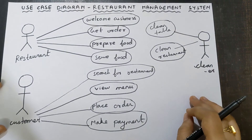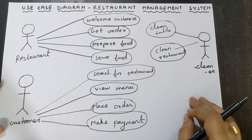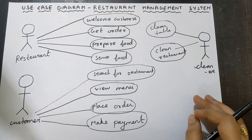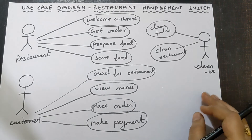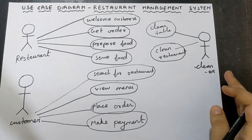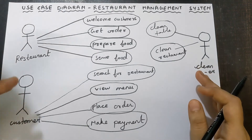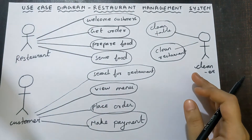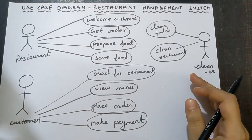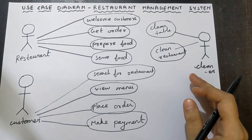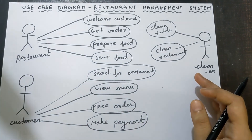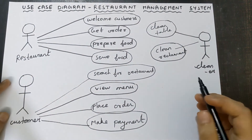Next is your third step — you need to mention the stereotype. There are two stereotypes: one is extend and one is include. Include means mandatory — it has to happen. Extend means it might happen; it is not necessary, it is optional. We can do it or we can ignore it. Whereas include means certain things are mandatory — you have to do that for sure.